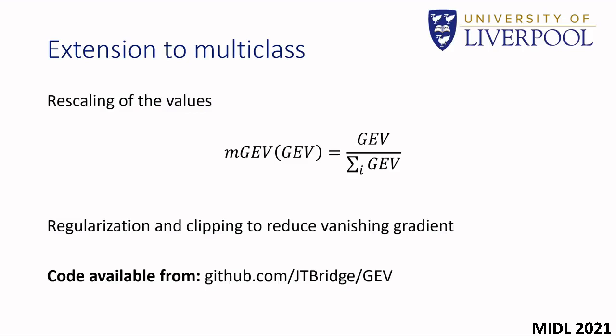We begin by fitting the GEV distribution function to each class separately. Then a probability is produced for each. However, this is not a true probability as they do not sum to 1. Similar to Softmax, we rescale the values so that they do sum to 1, creating a true probability. We found that the MGEV could be prone to the vanishing gradient problem, similar to Softmax. So we added L1 and L2 regularization and clipped input values to deal with this.